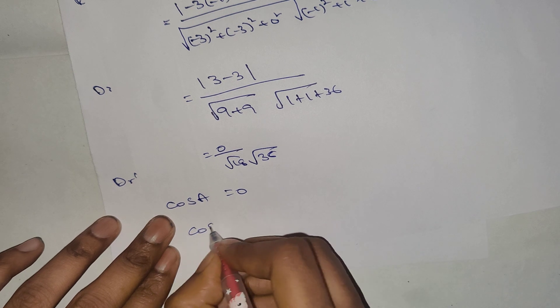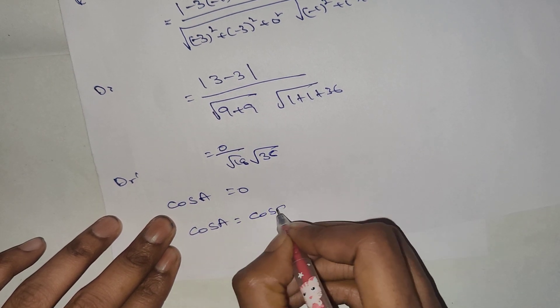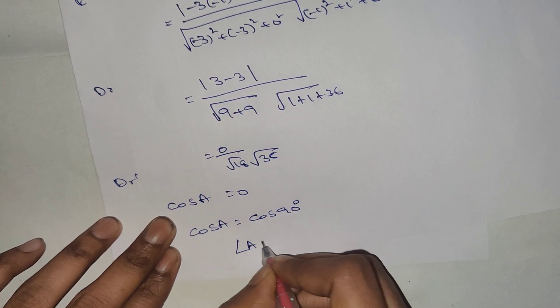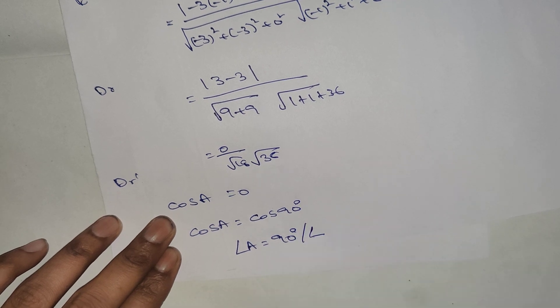So cos A equals cos 90°, meaning angle A equals 90 degrees.